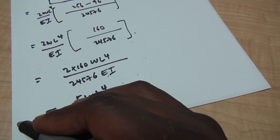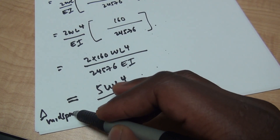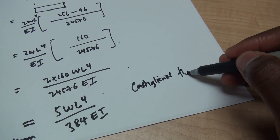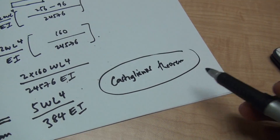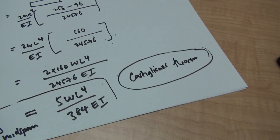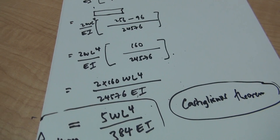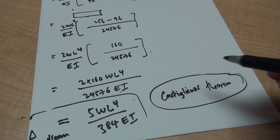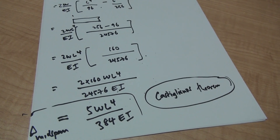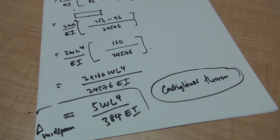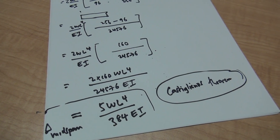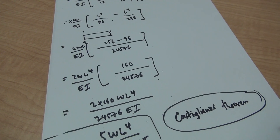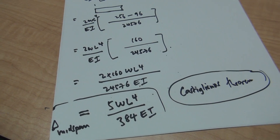And this, my friends, is the deflection at mid-span of the beam using Castigliano's theorem. Like I said, it's a very simple and very common problem — you will find it in one of your quizzes or tests. Feel free to subscribe, like the video, and if you found it beneficial, leave a comment or send me an email. If you have any other problems you'd like me to work through, just let me know. Till next time, thank you.